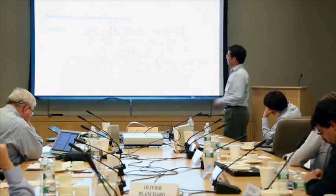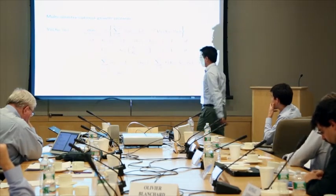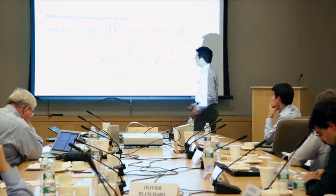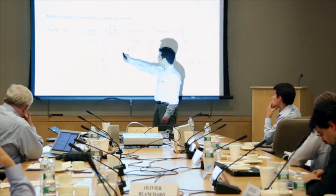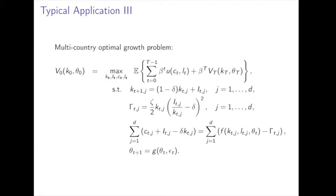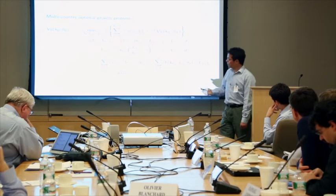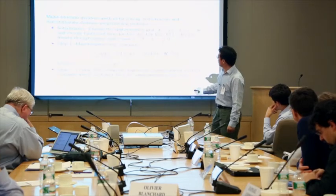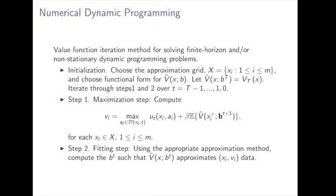The third test problem is the multi-country optimal growth problem. In this case there is an adjustment cost, and theta represents stochastic shocks. This is the framework of our algorithm — a general algorithm structure showing the maximization steps. We first choose approximation nodes XI, and at each XI we calculate the value function VI via a maximization problem. If you have many approximation nodes, you will have many optimization problems.